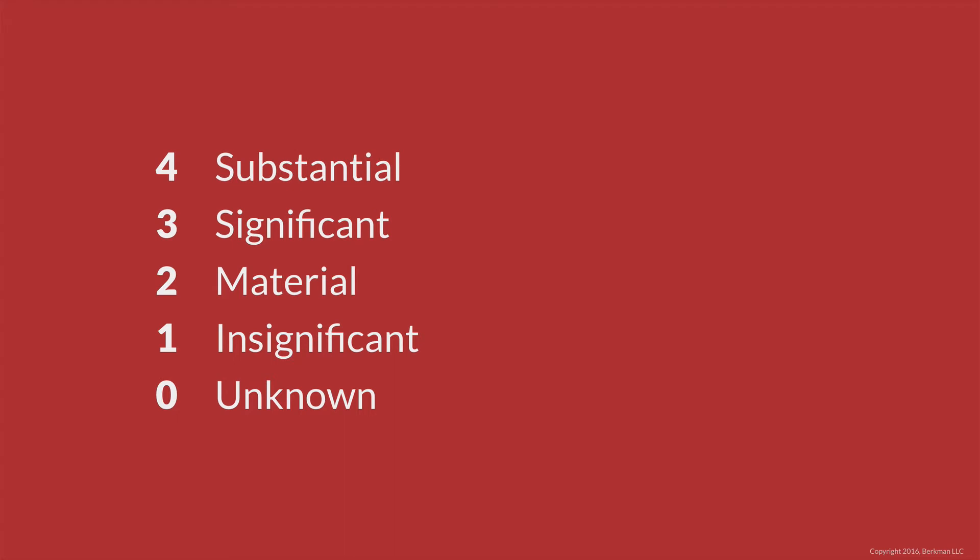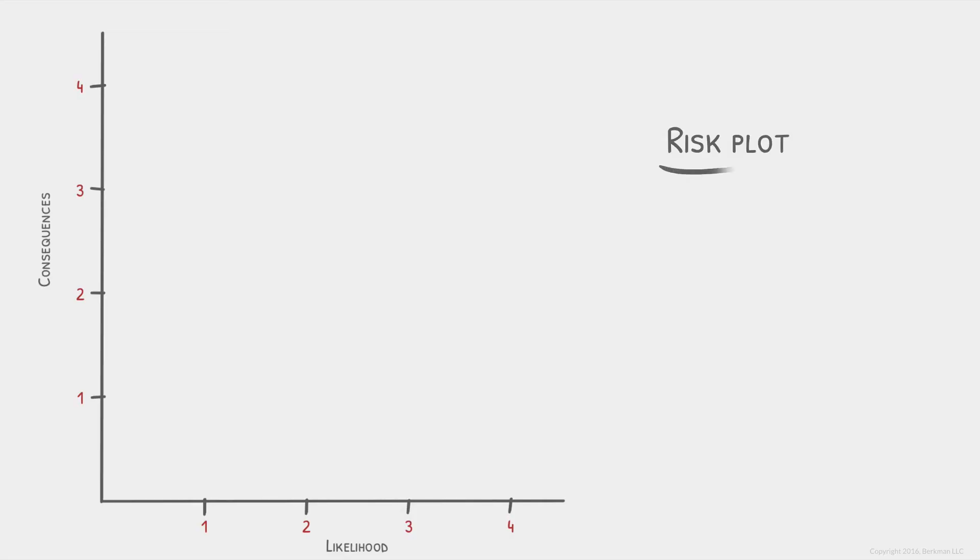Here, for example, are the likelihood and consequences we developed earlier. These rating scales allow us to plot a single view of a legal risk that is consistent, scalable, clear, and importantly, visual.